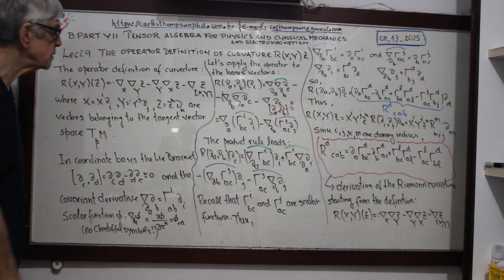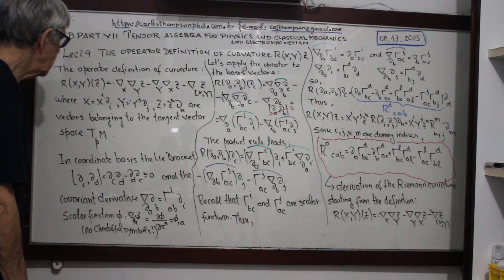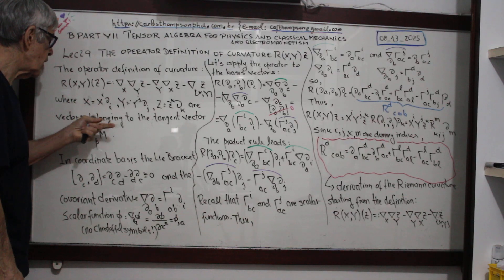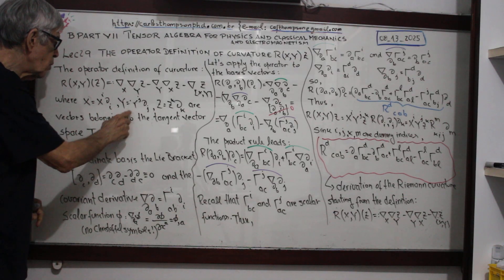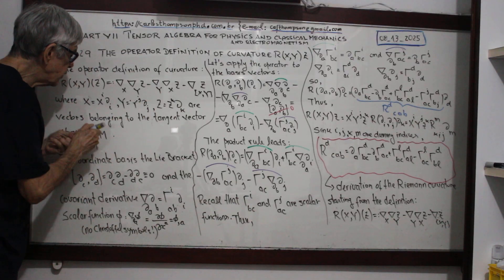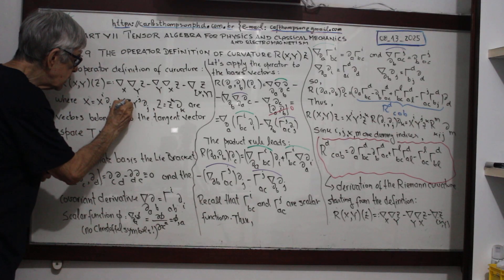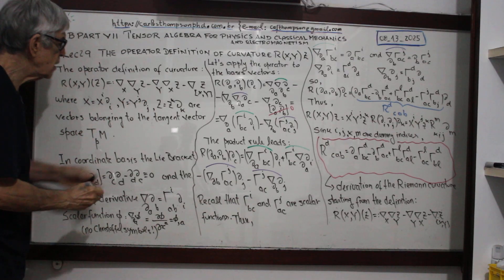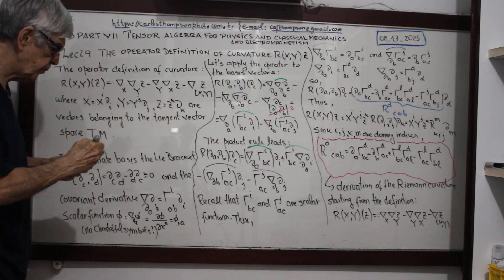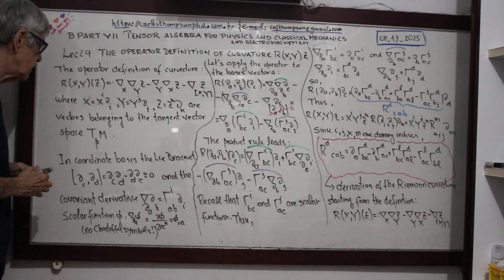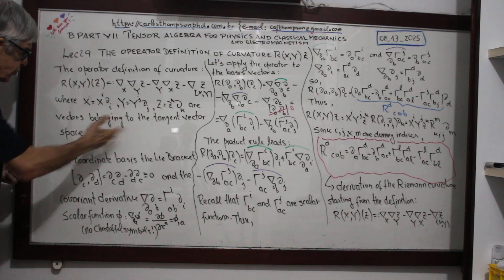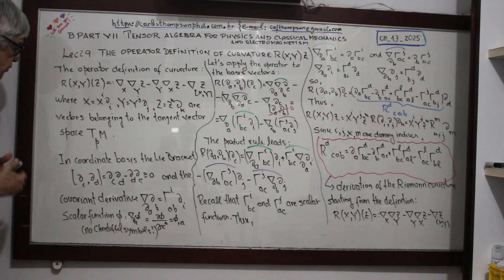The Lie bracket. And x = x^i partial/∂x^i, y = y^j — they are the components — and z = z^k partial/∂x^k. These are vectors belonging to the tangent vector space.